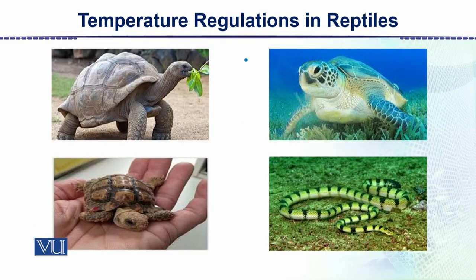These are the different animals that come under the heading of reptiles — there is a tortoise, a turtle, a small-sized turtle, and a snake. All these animals have scales on their bodies or dry skin, and they have adaptive adaptations to regulate their body temperature. This is all about temperature regulation in reptiles.